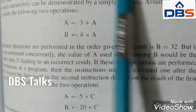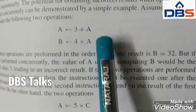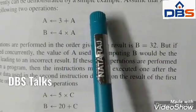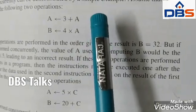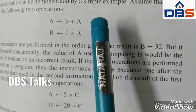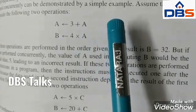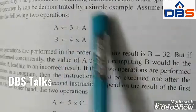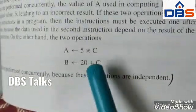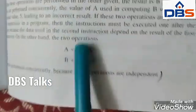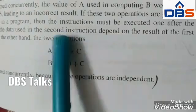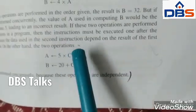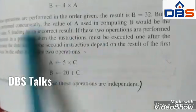Here is an example of data hazards: a = 3 + a and b = 4 * a. When executed in the given order, the result is b = 32. But if they are performed concurrently, the original value of a (which is 5) would be used, leading to an incorrect result. In the second example, there is no problem executing concurrently because only one variable is used on the right side.